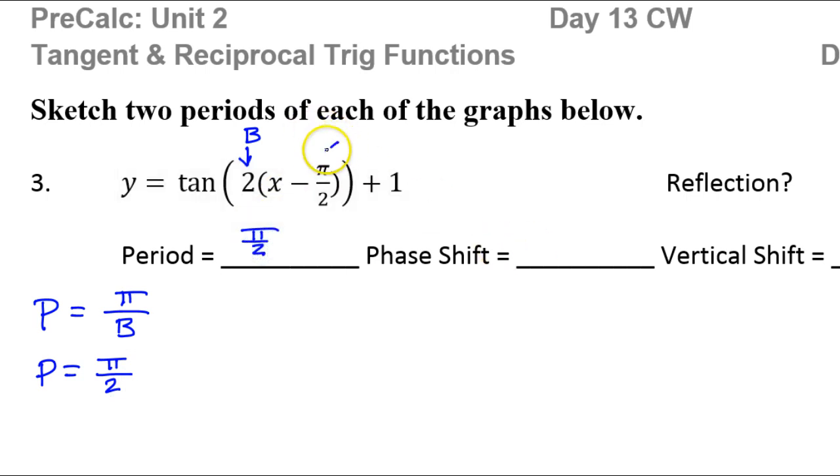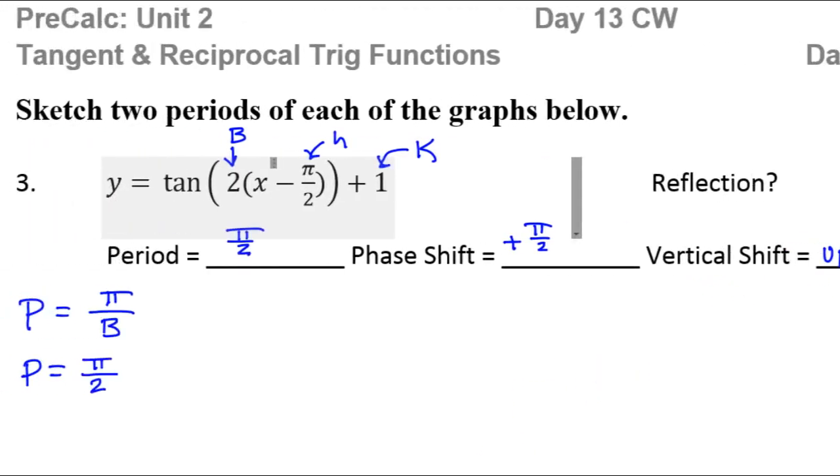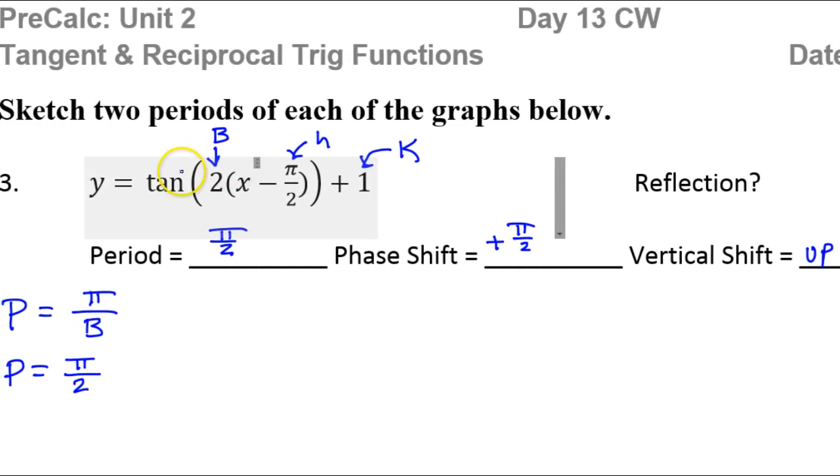There is a phase shift, as given by this H value. The sign will change, so the phase shift is at positive π over 2. And there is a vertical shift, given by this K value. No sign change there. This will be up 1. We will deal with the asymptotes at the end, vertical asymptotes. Reflection, there's no reflection, there's no negative sign in the front, so I'll just say no next to that.